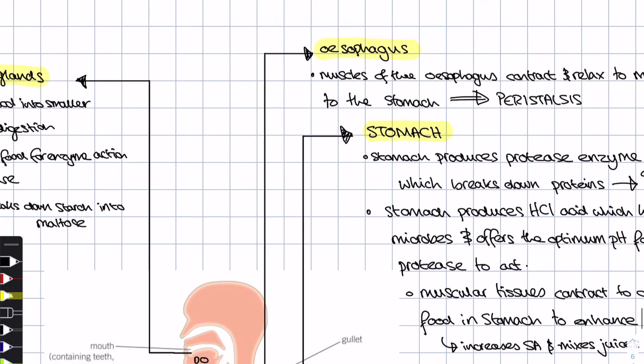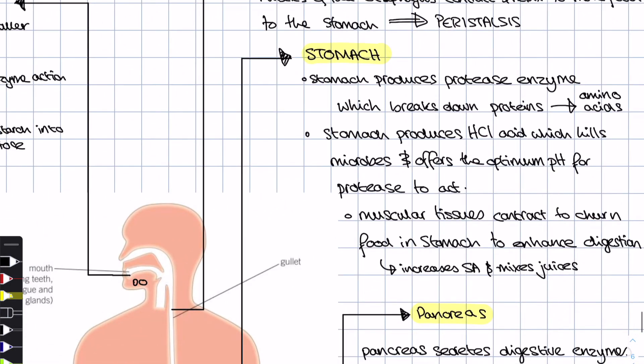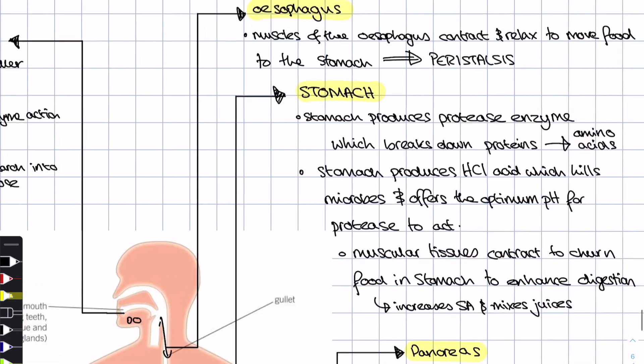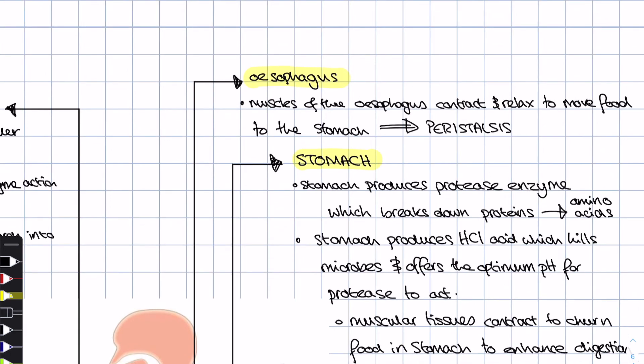Now, after all that's happened in your mouth, your food is going to pass through this muscular tube called the esophagus, also called the gullet sometimes. The esophagus is this muscular tube and what it does is it contracts and relaxes to push food from the back of the throat down to the stomach. And this is a process known as peristalsis.